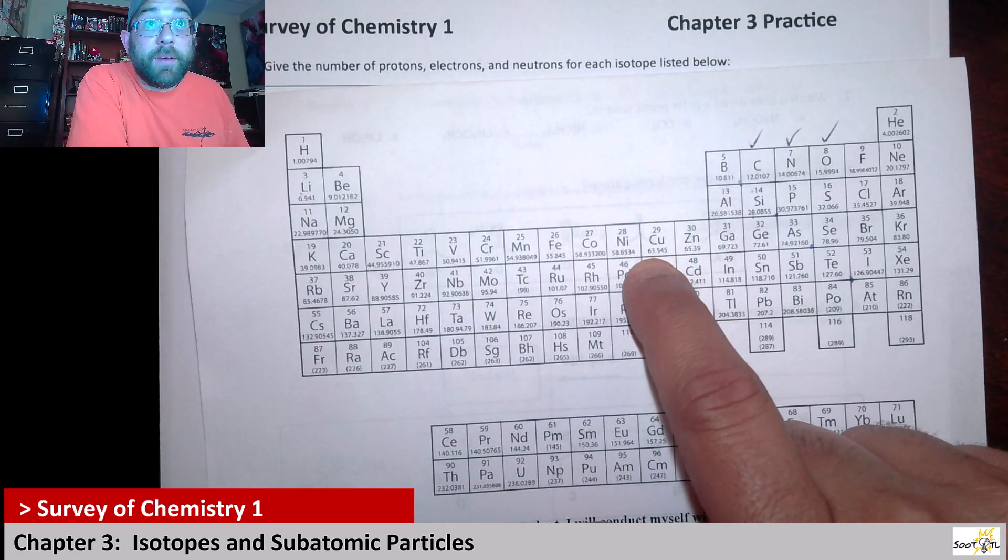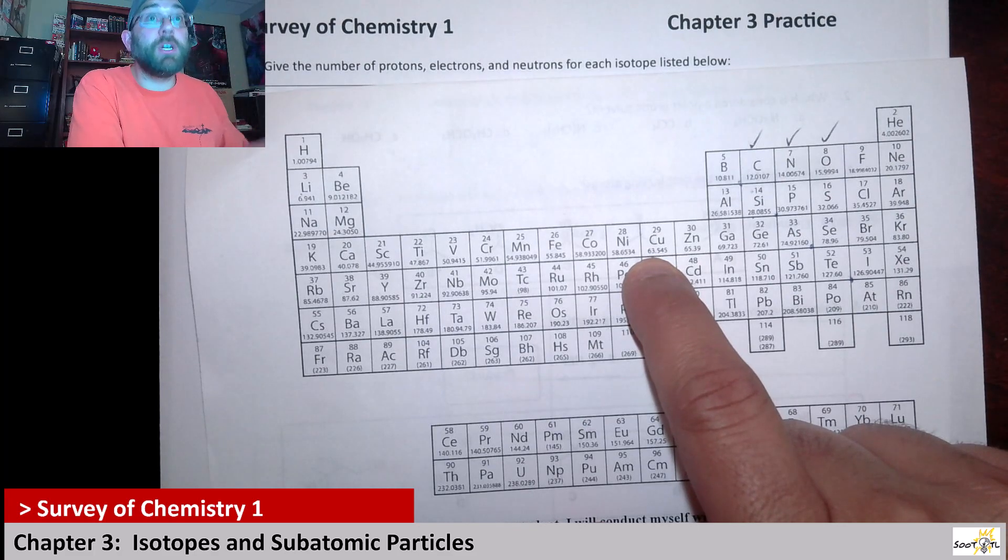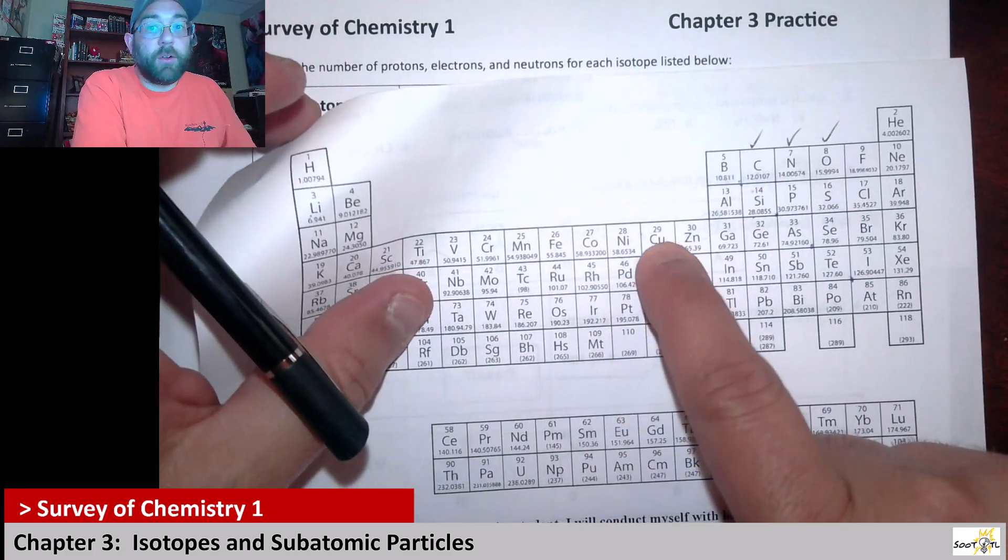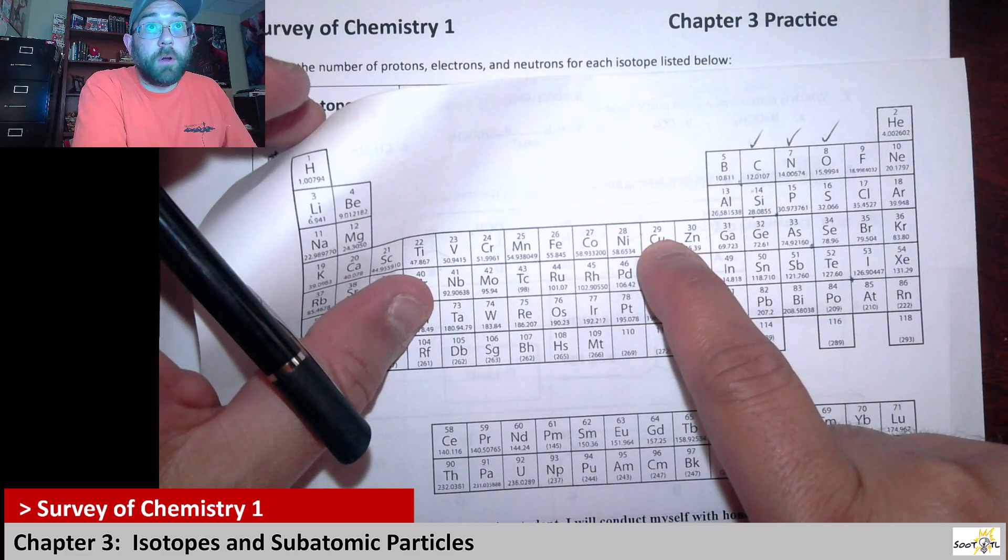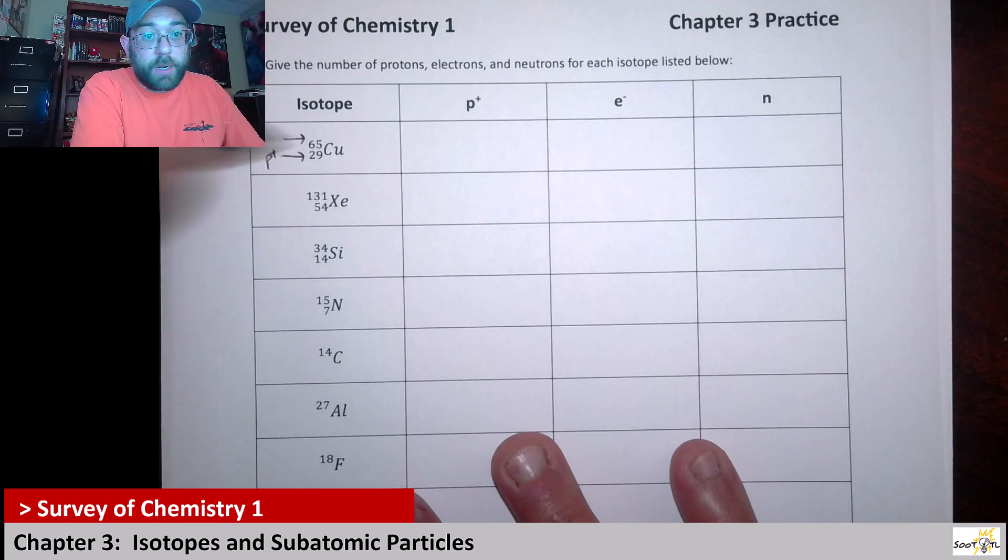Copper is always 29 because any atom that has 29 protons is copper, period. It can differ in its number of electrons and its number of neutrons, but if it's got 29 protons, that's a copper atom. And it's always that number here on the top, up above the symbol on the periodic table.